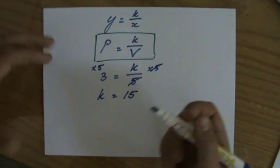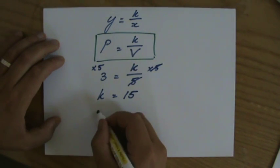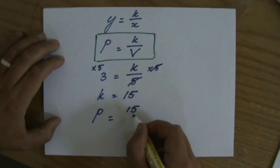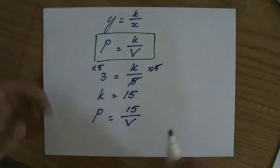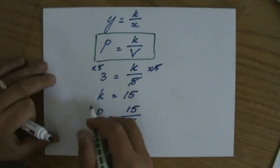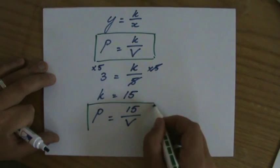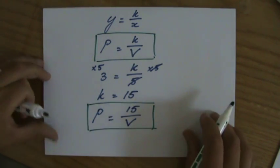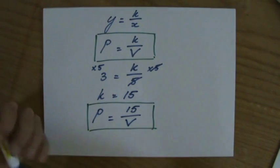So the equation for this particular situation is that the pressure equals 15 divided by the volume. Because that's what we have to do. We always with direct and inverse proportion have to find that equation belonging to this situation.